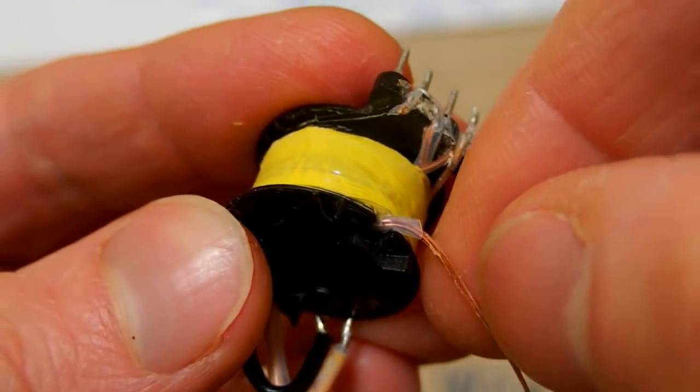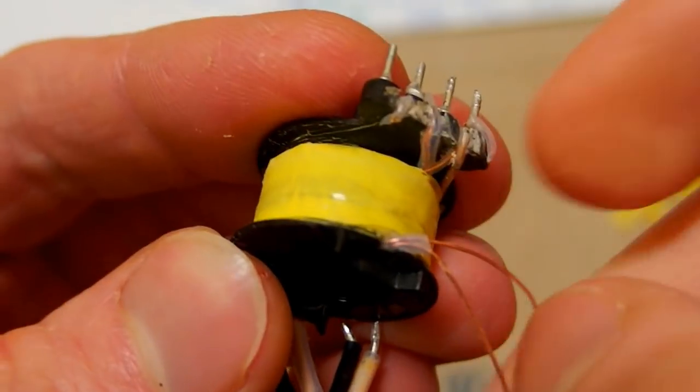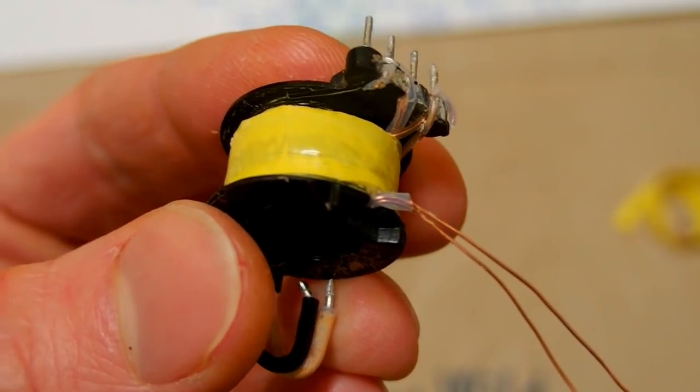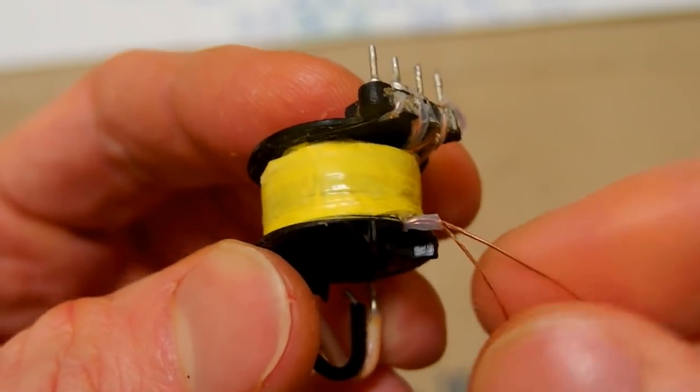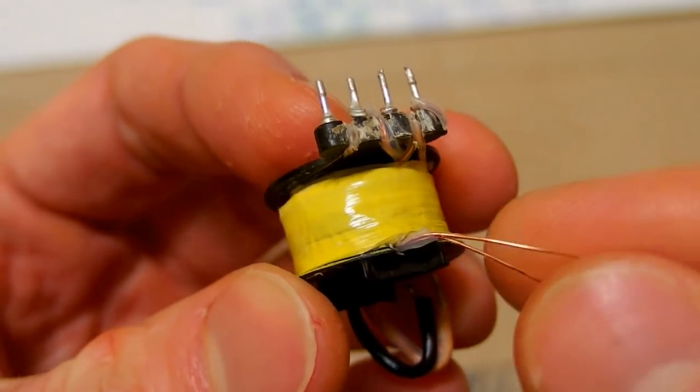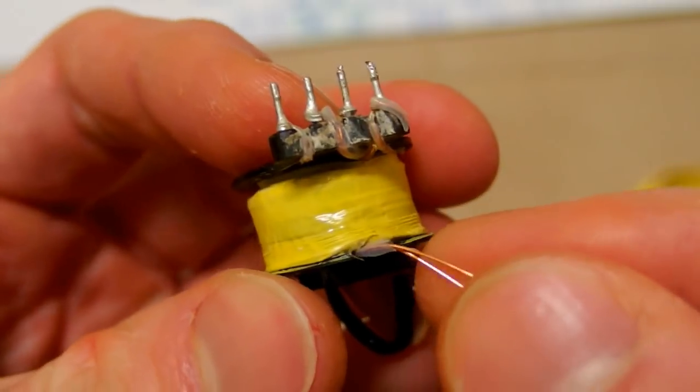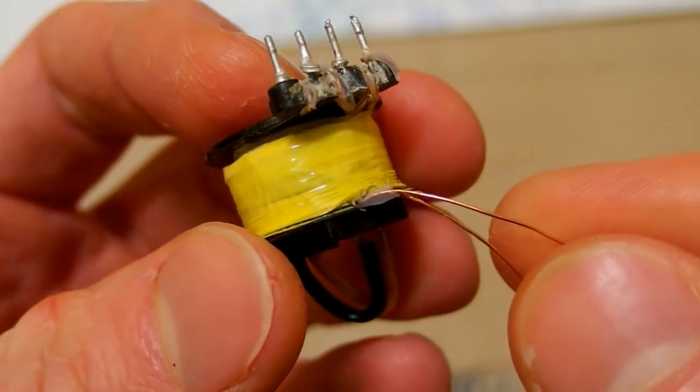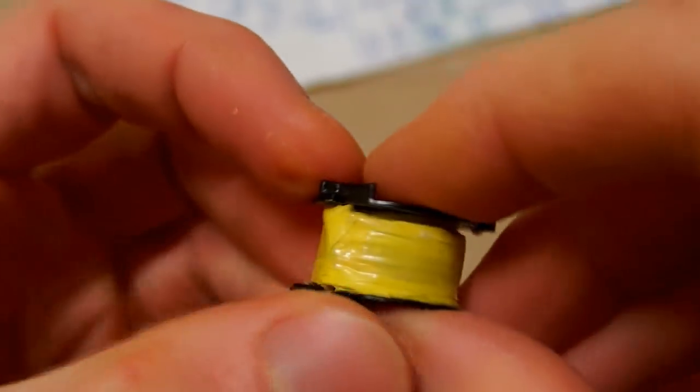And as you can see the primary is made of two wires. For high frequency current it's better to use more thin wires instead of just one thick wire because of the skin effect. Because at high frequency the current doesn't penetrate into the center of a thick wire. So let's continue.